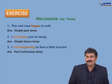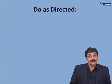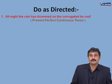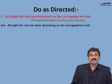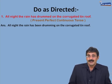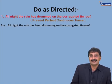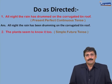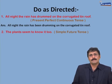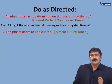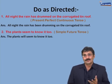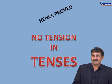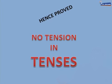Now let's change the tense. 'All night the rain has drummed on the corrugated tin roof' — change to present perfect continuous. Using the rhyme: have/has/will have been plus ING — 'All night the rain has been drumming on the corrugated tin roof.' Second: 'The plants seem to know it' — change to simple future: will/shall plus verb — 'The plants will seem to know it.' I hope you've enjoyed this and we have proved there is no tension in tenses. Thank you, love you, God bless!